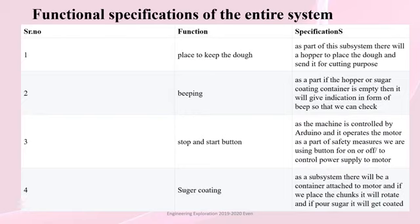Functional specifications of the entire system. There will be a hopper to place the dough and send it for cutting. If the hopper or sugar coating container is empty, it will give an indication in the form of a beep. A start and stop button controls the machine via Arduino, operating the motor as a safety measure. There will be a container attached to the motor for sugar coating — when chunks are placed, they get sugar coated.